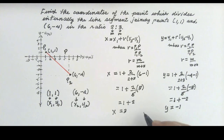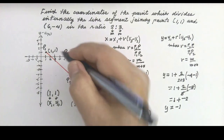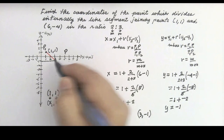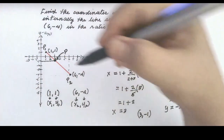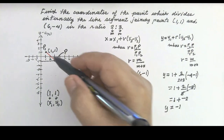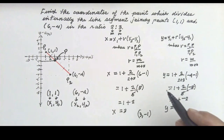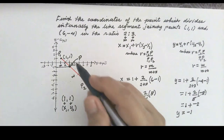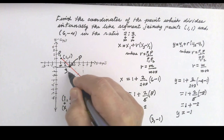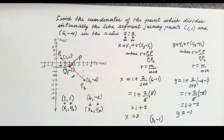So y equals -1, and the coordinates of P are (3, -1). We can locate this point on the coordinate plane. This point divides the segment internally in the ratio 2 to 3, where M is 2, N is 3, and M plus N equals 5.